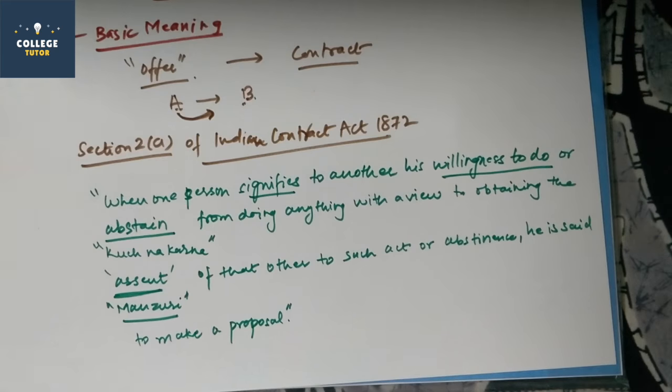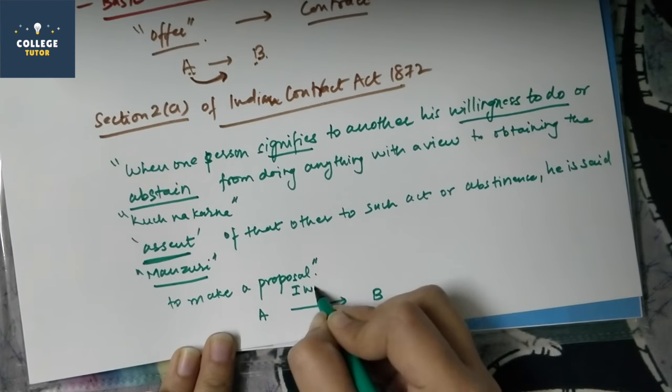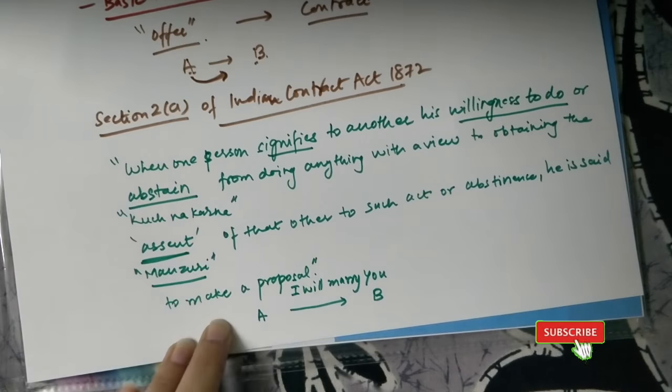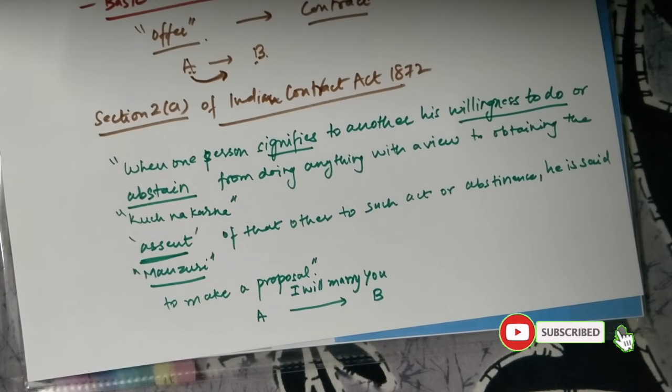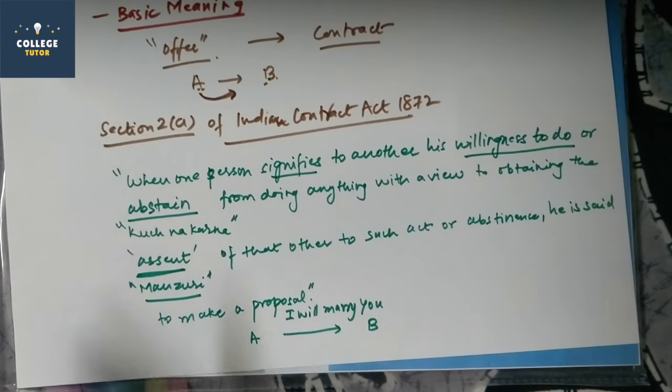This can be a very good example which you can understand. A has given a proposal, B has given a proposal. 'I will marry you.' A has given a proposal, 'I will marry you.' Can we call this proposal an offer? This is not an offer. This is not a proper offer.